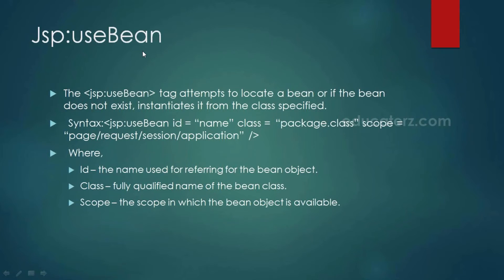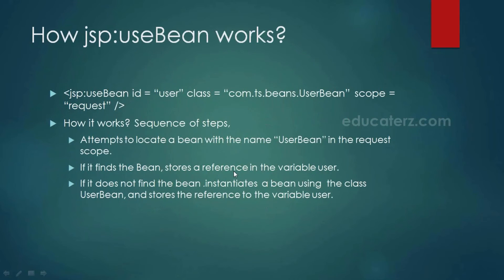The useBean action tag is used to locate a bean. If the bean doesn't exist, it creates a new object; if it already exists, it uses the existing one. The syntax is: <jsp:useBean id="objectName" class="fully.qualified.ClassName" scope="page|request|session|application">. How it works: it attempts to locate a bean with the given name in the specified scope. If found, it stores the reference in the variable given by id. If not found, it instantiates the bean using the class attribute and stores the reference in that variable.